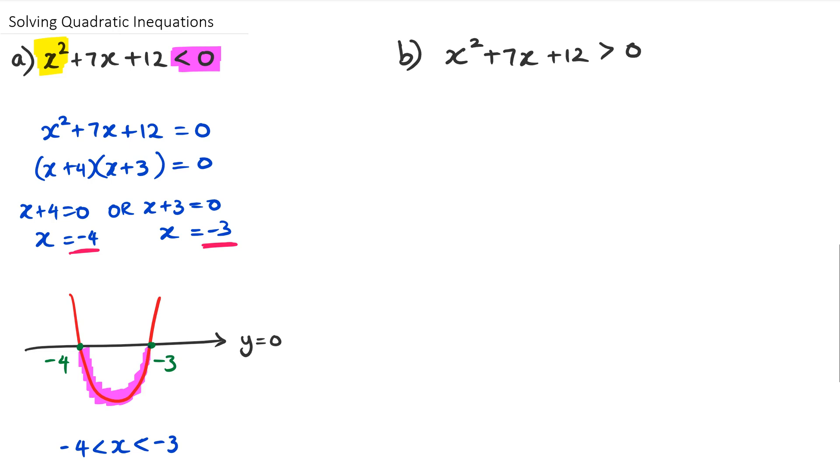So let's say if it was x² + 7x + 12 and it's greater than zero. So we're still going to do the same thing. We're still going to put it equal to zero. So x² + 7x + 12 equals zero. And then we factorize it.